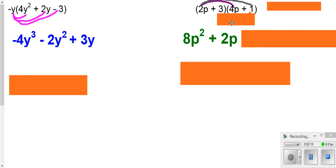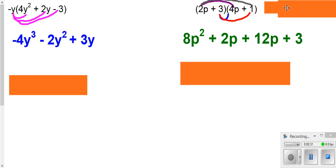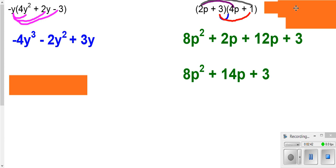And we would get this. And then you've got to take the next term in the first parentheses times each one in the second parentheses. And so 3 times the 4p and the 3 times the 1. And then collect any like terms if you have any. And in this case, our only like terms are the middle two terms. So we're going to have our 8p squared, our 2p, and our 12p plus our 3.